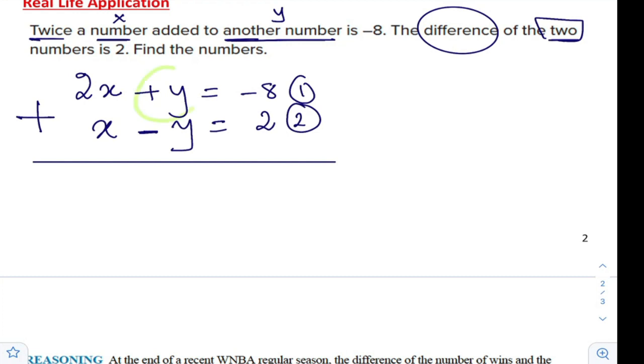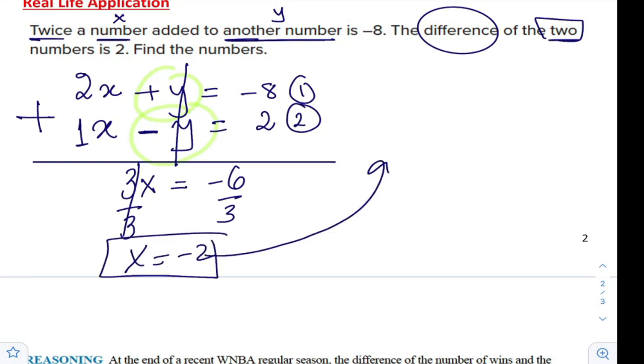How can we solve? Simply we can add. Why adding? Because here we have opposites. Adding. Remember, this is 1, so it is 3x, and this will be cancelled. Negative 8 plus 2 is negative 6, dividing by 3, x is negative 2. And replacing, I'll use this to replace. We have x minus y is 2, replacing by minus 2.